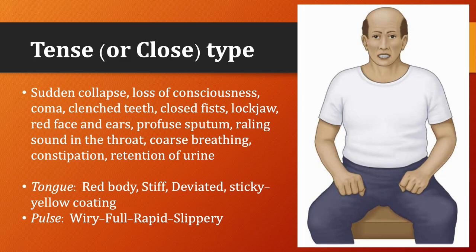Tense or close type corresponds to collapse of yin. Clinical manifestations: sudden collapse, loss of consciousness, coma, clenched teeth, closed fists, locked jaw, red face and ears, profuse phlegm, rattling sound in the throat, coarse breathing, constipation, retention of urine. Tongue will have a red body, stiff, deviated, with a sticky yellow coating. Pulse is wiry, full, rapid, slippery.